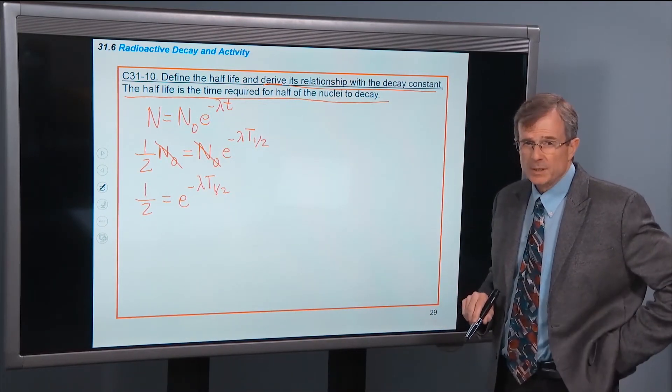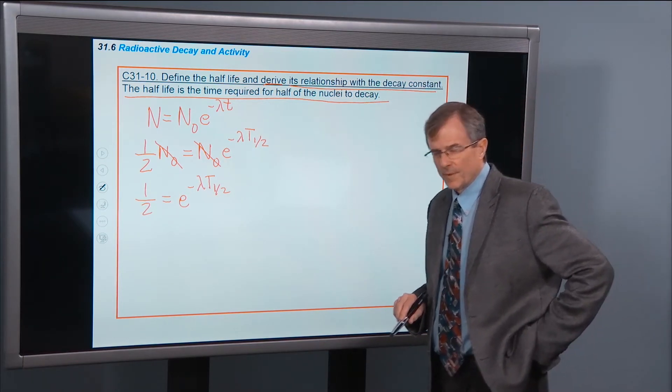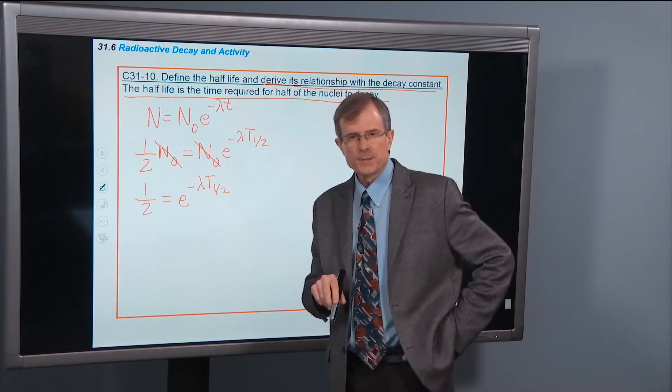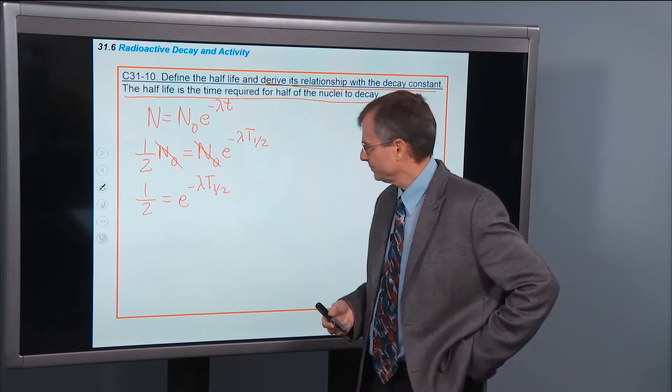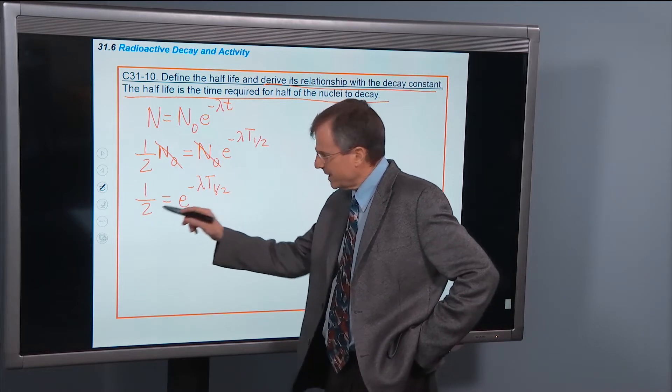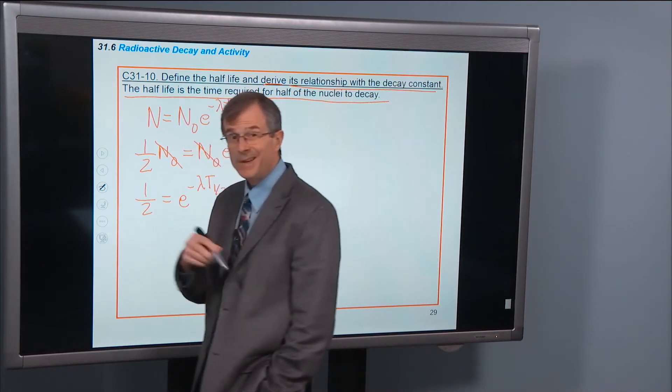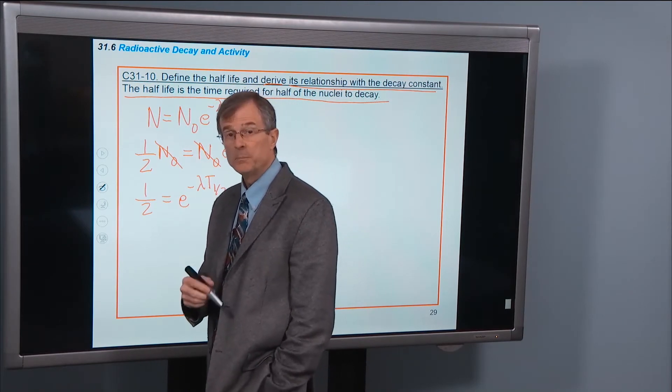Now we're trying to solve for t 1 half. How are we going to find it? Like we talked about last semester when we talked about decibels. In order to get what's in here, we're going to have to take the logarithm of both sides of this equation, the natural logarithm, base e.